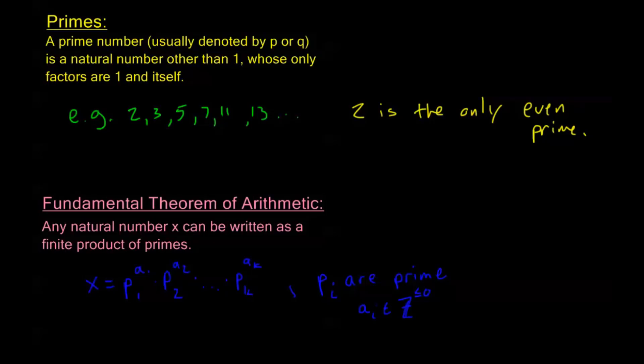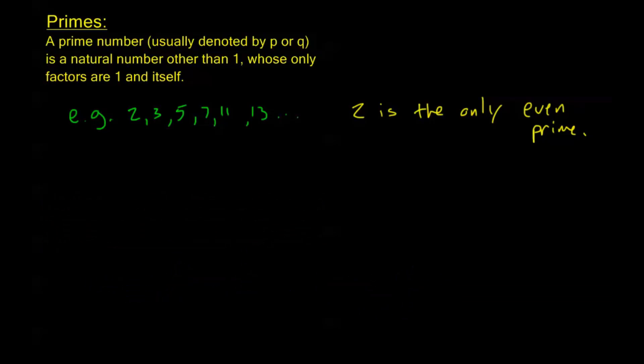Now, this factorization is always unique. So we can infer some kind of neat things from this. So let's say I have 2 to the a times 3 to the b times 5 to the c equals 2 to the x times 3 to the y times 7 to the z.